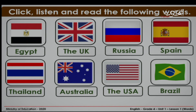Now let's look at these flags of different countries. I am going to read the names for you and you are going to repeat after me. Egypt. The UK. Russia. Spain. Thailand. Australia. The USA. Brazil.